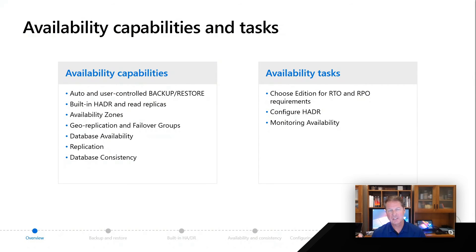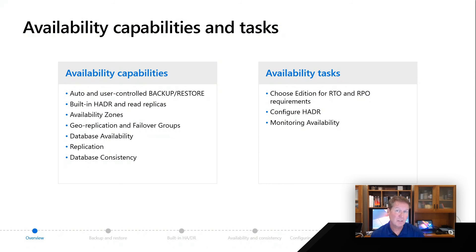The tasks you're going to see in this module for availability are going to be very familiar to you, like picking the right deployment that meets your RTO and RPO requirements for high availability. You may have some configuration things you need to do from a high availability perspective — we'll talk about and show you how to do that. And finally, we'll show you some of the tools and techniques you can use to monitor the availability of your Azure SQL deployment.